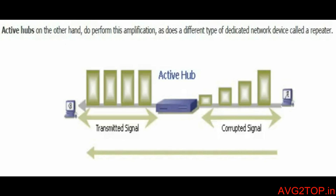Active hubs perform amplification. When data is sent, the active hub amplifies or boosts the signal and also acts as a repeater until the data is sent to the right destination. In contrast, the passive hub does not act as a repeater — the signal may be weak during transfer — but in the active hub, amplification is possible and the networking device also works as a repeater.